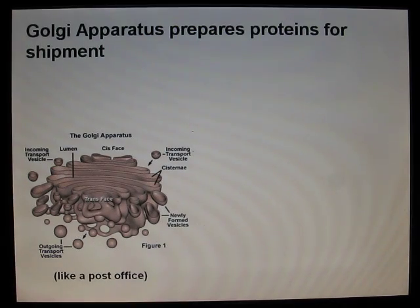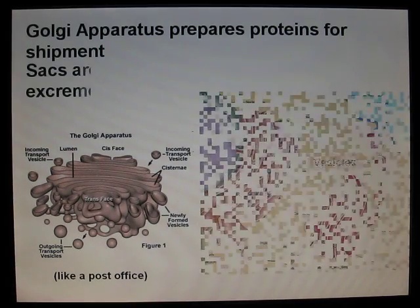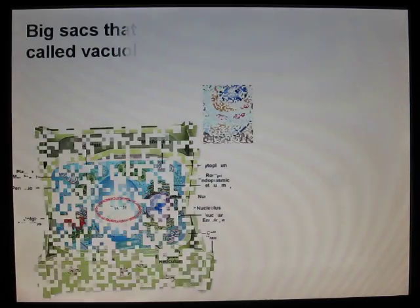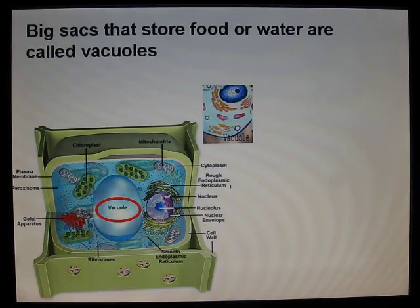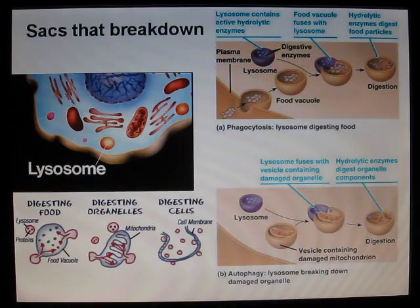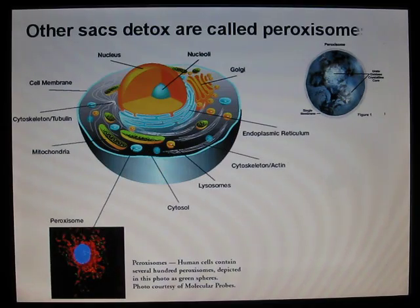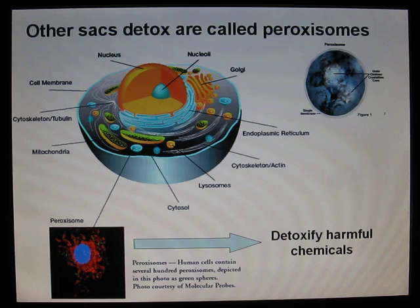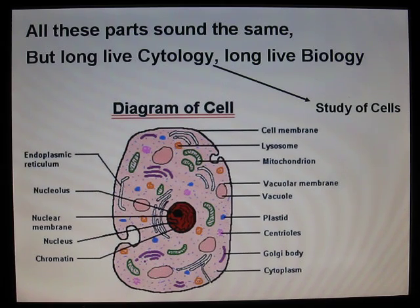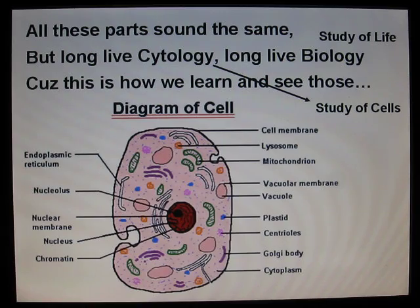Golgi apparatus prepares protein for shipment — stacks are called vesicles. Big stacks that store food and water are called vacuoles. If you look at a microscope, they appear as empty holes. Stacks that break down waste are called lysosomes. Other stacks are called peroxisomes. All these parts sound the same, but long live psychology — long live biology — and this is how we learn and eat.